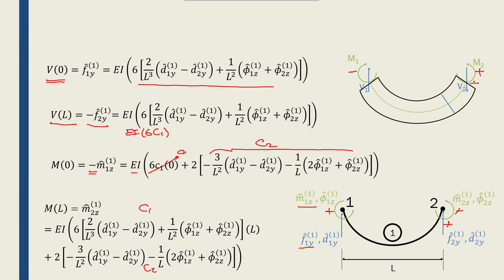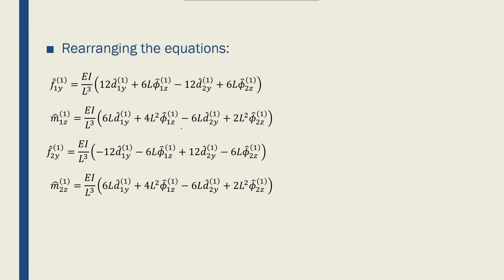These equations look very overwhelming, but we can rearrange them and write them like this. Now f1y becomes this equation with respect to, or as a function of, d1y, phi1z, d2y, and phi2z.